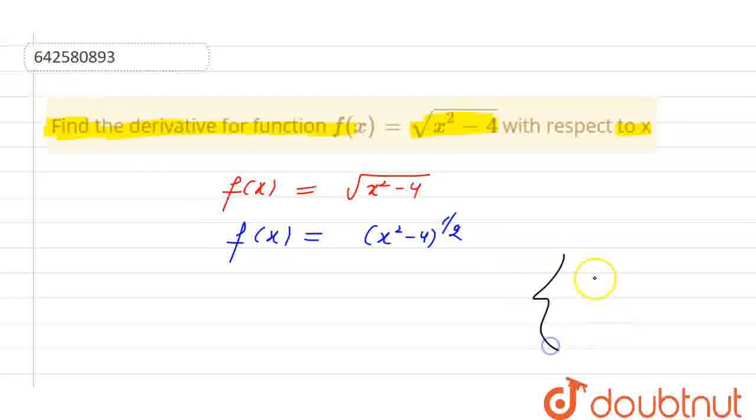So, here we can apply the formula of x raised to the power n which equals n x raised to the power n minus 1, means power shifts to coefficient and it decreases by 1.